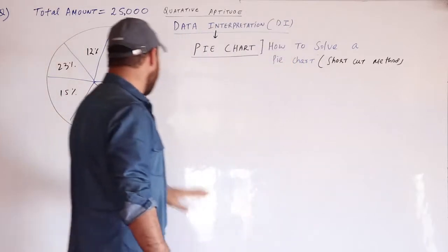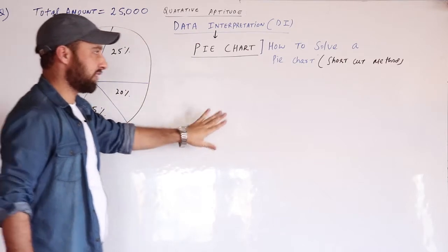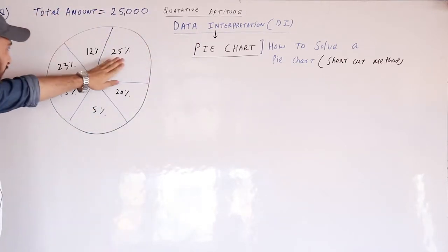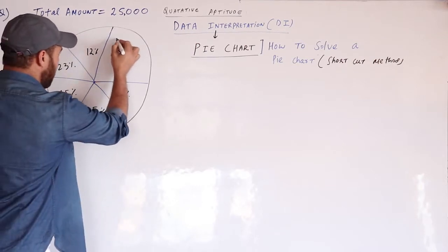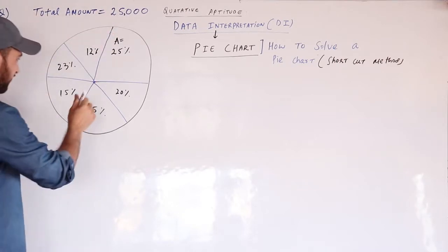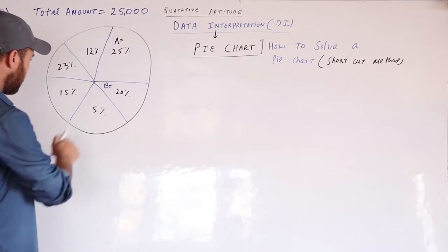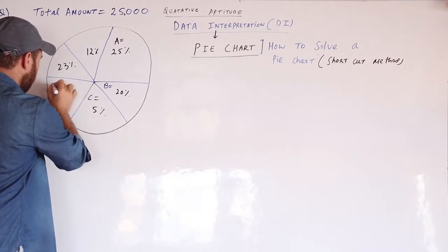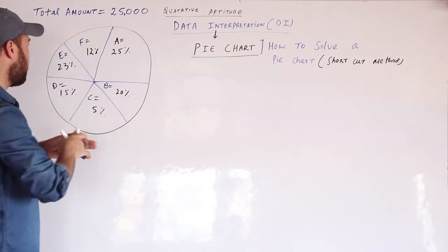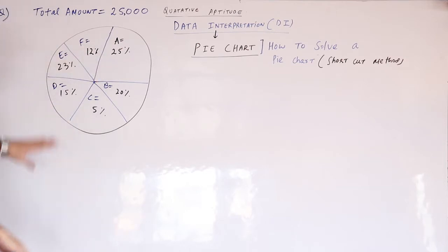For example, this is a pie chart shown on the board. We have a total amount of 25,000, and this 25,000 has been broken into different parts. Person A spends 25% of this total amount, Person B spends 20%, Person C spends 5%, Person D spends 15%, and persons E and F also have their respective percentages.